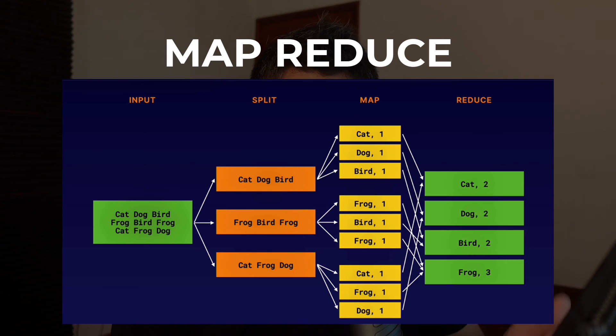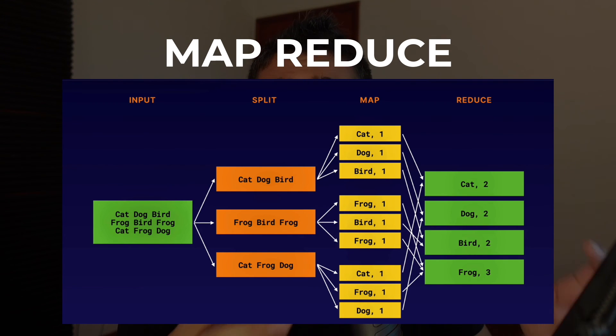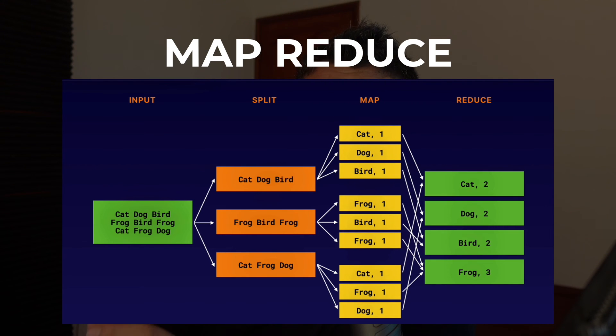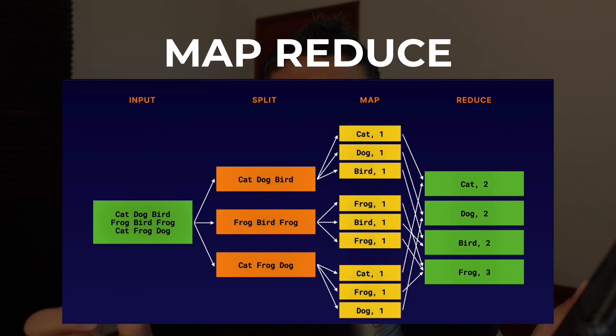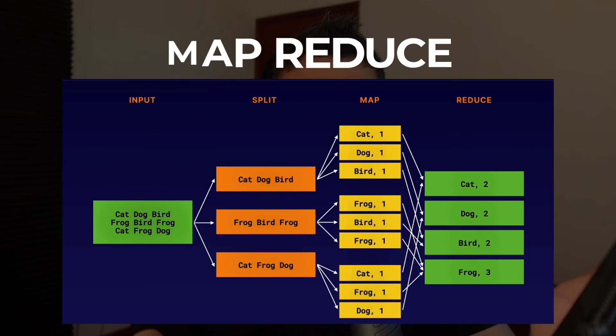The second concept you need to understand is MapReduce. When there's a big chunk of data processing tasks, Hadoop introduced MapReduce which breaks your task into multiple smaller tasks and assigns each to a worker - this is called the map stage. It processes those smaller subsets of data independently, and then reduces them back when you're aggregating, managing, or saving the data.